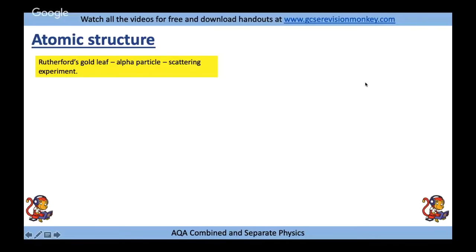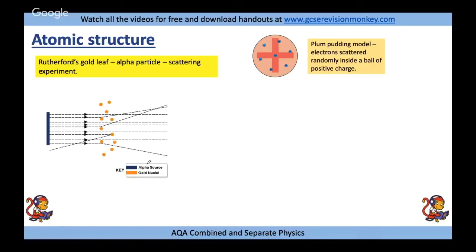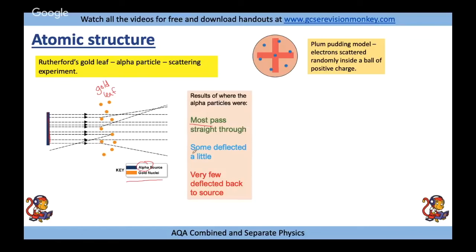For atomic structure, Rutherford's gold leaf alpha particle scattering experiment started with the plum pudding model - a large sphere of positive charge with electrons randomly scattered inside. In the experiment, alpha particles were fired at thin gold leaf. They expected nearly all to pass straight through. What they actually found: most did pass straight through, some were deflected slightly, and a very small number rebounded back towards the source.